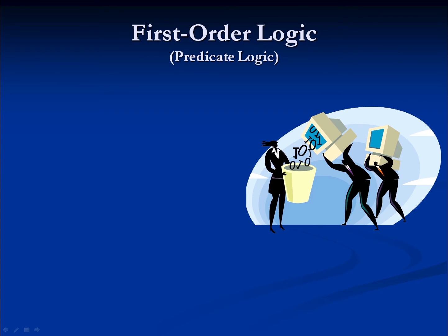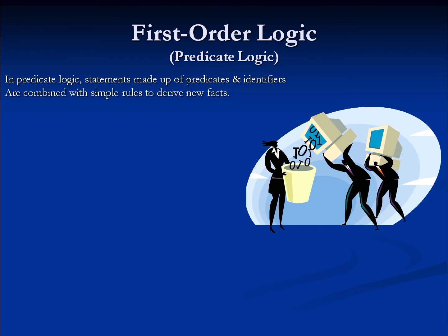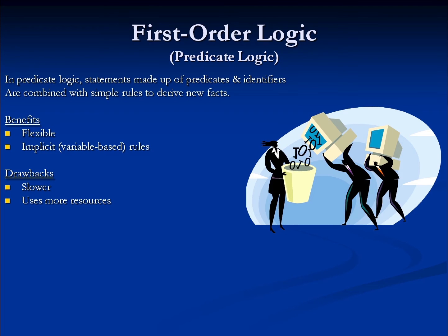If we want to get beyond the limitations of propositional logic, we can instead approach a problem using first-order logic, also known as predicate logic. In first-order logic, statements are made up of two parts: a predicate, which is fixed, and an identifier, which can be a variable. By introducing variables into the mix, we get a lot more flexibility and also get implicit, or variable-based, rules. The drawback is that we now require a formal system — it's no longer enough to establish simple identifiers using pound-defines. These systems must be explicitly built and optimized, meaning they use more resources. In fact, there are entire languages built on this concept.